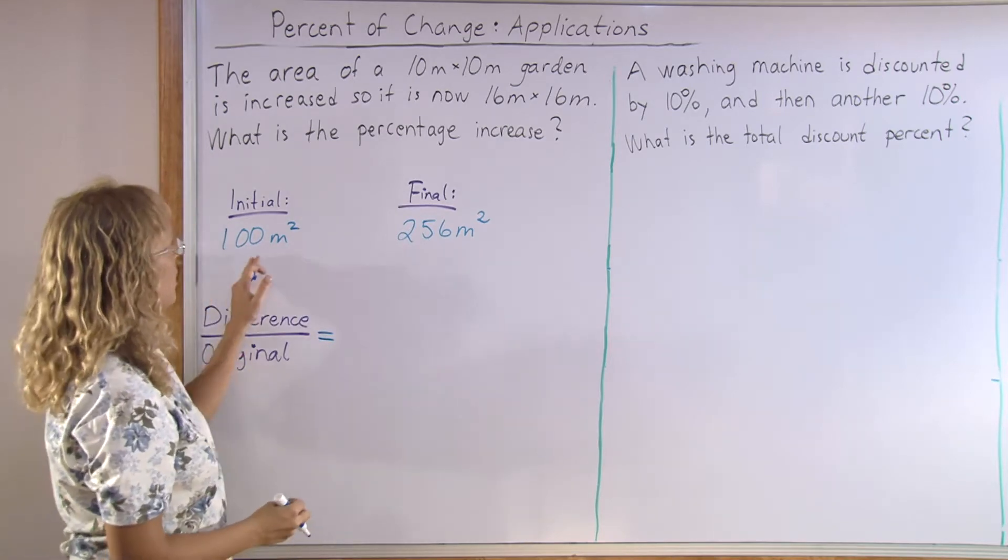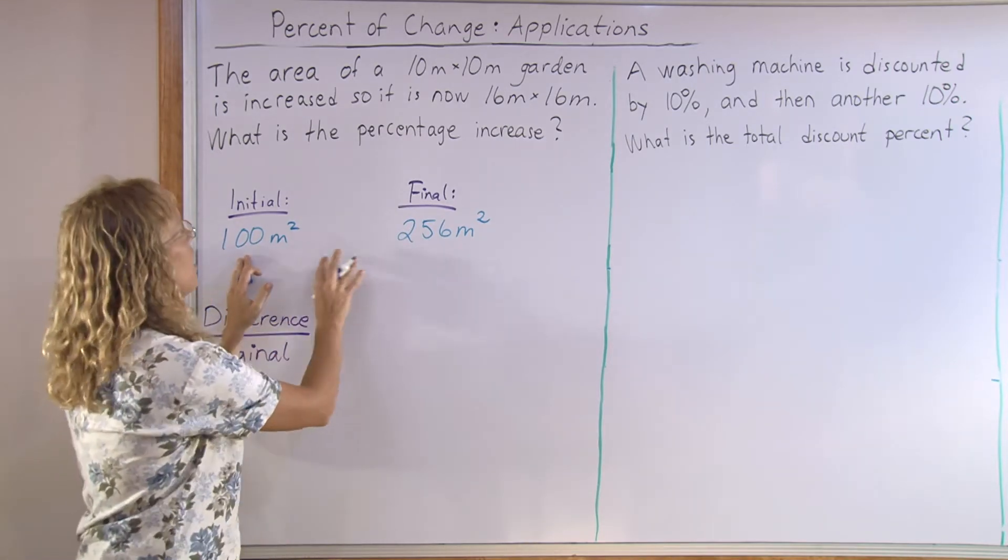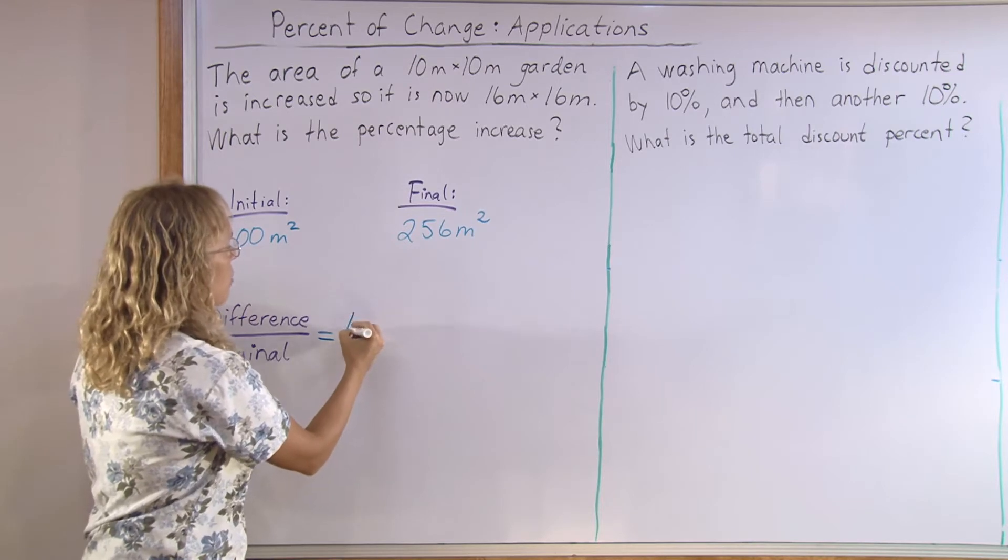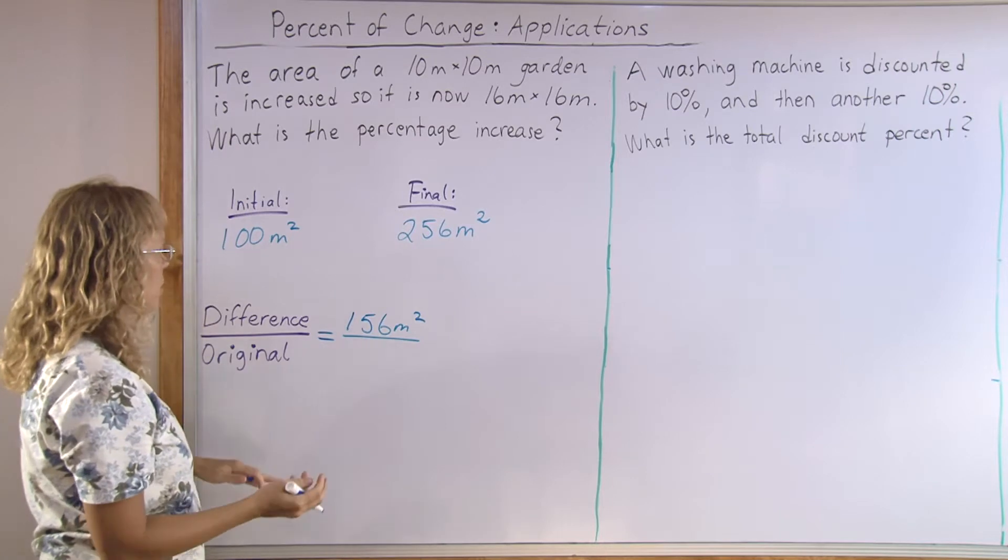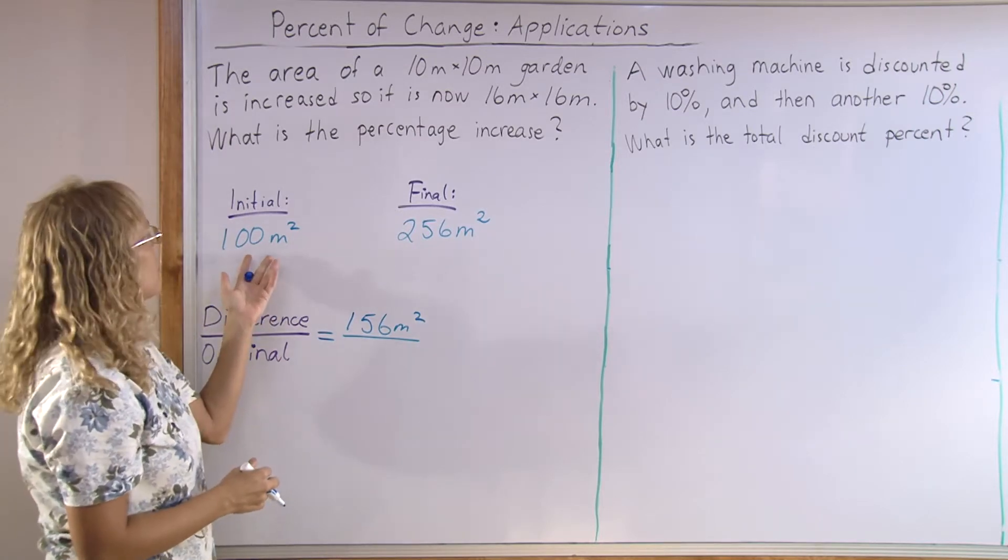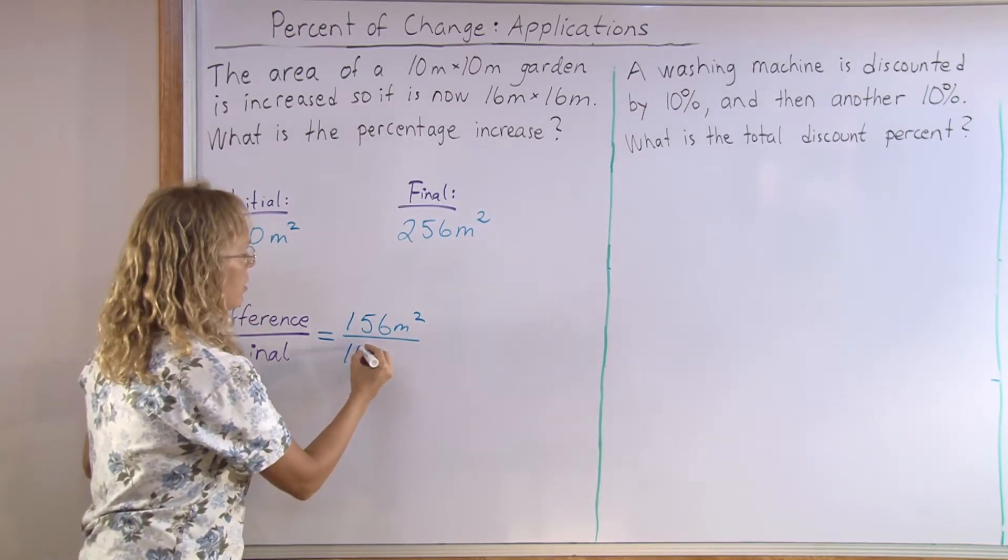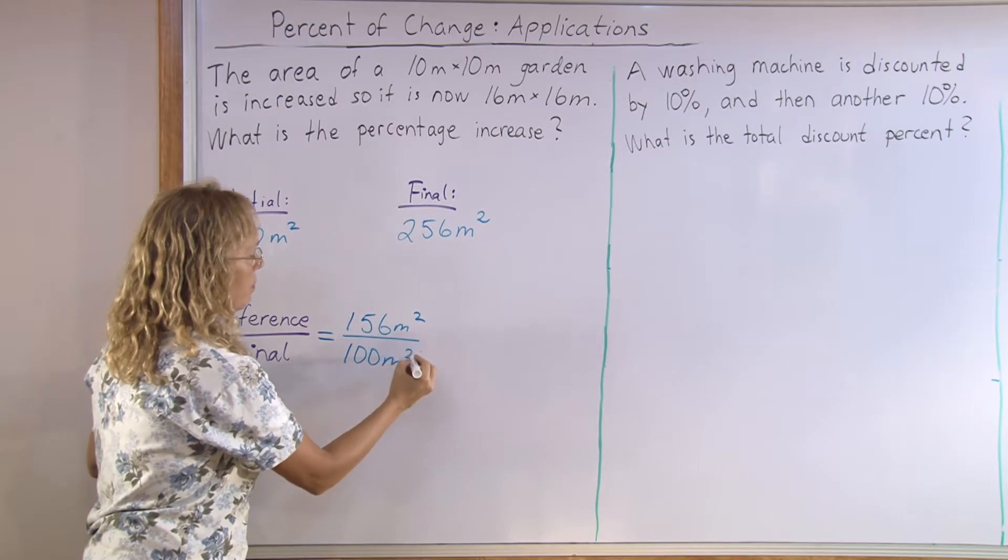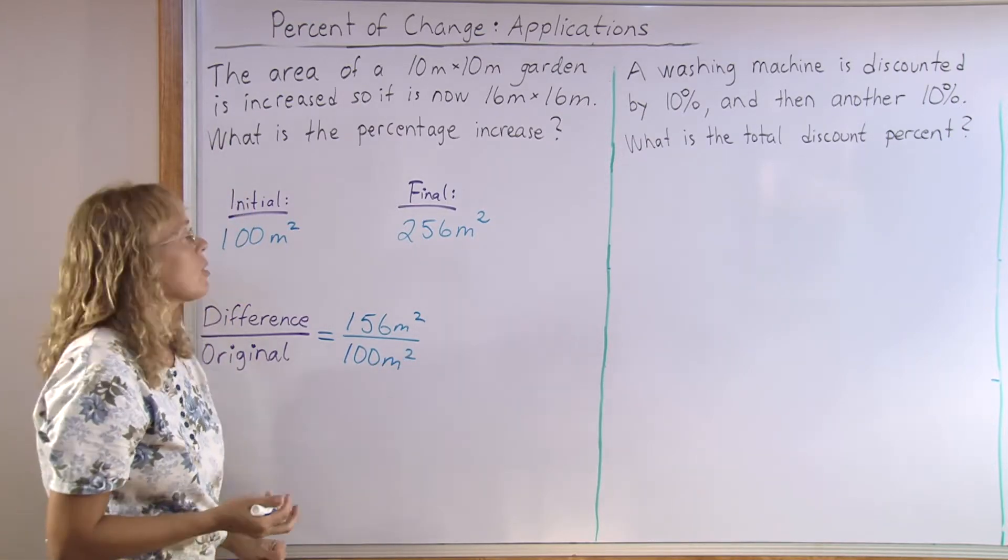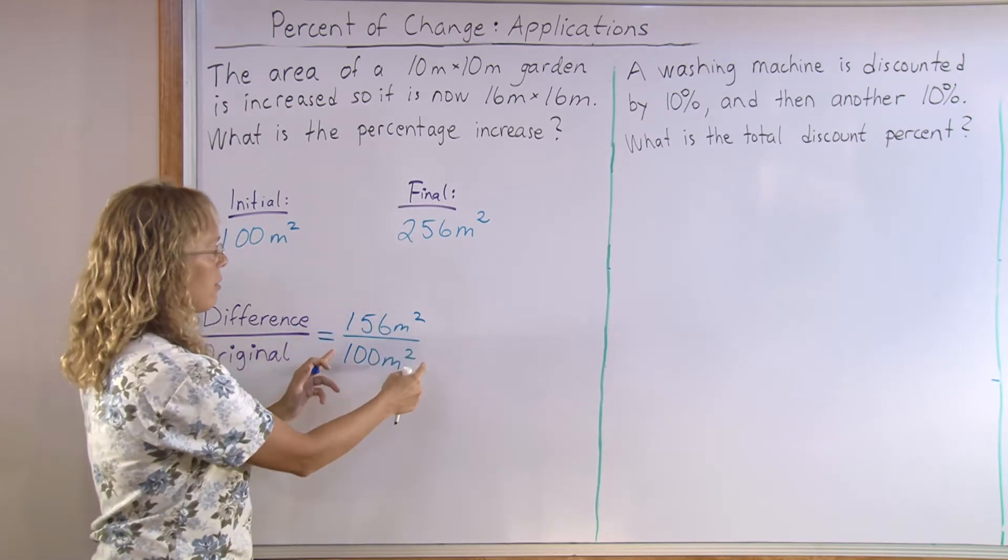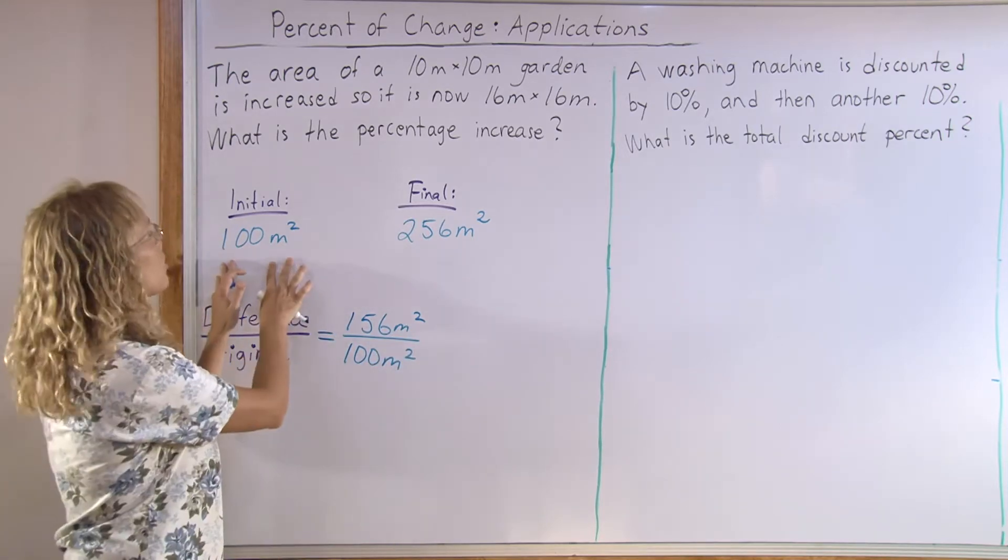So, let's look at this one. We subtract these two to find how much the area increased, which is 156 square meters. And then we will compare that with the original area, 100 square meters. And basically, we want to find out what part is this of that. What part is the increase of the original?